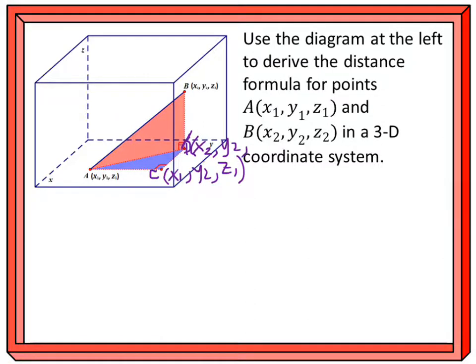And then finally, the z-coordinate, well, that point on that red triangle, that point D, is still on the x-y-coordinate plane, so its z-coordinate should still be z1. All right. So now we should have enough information to find lengths of all of these segments.